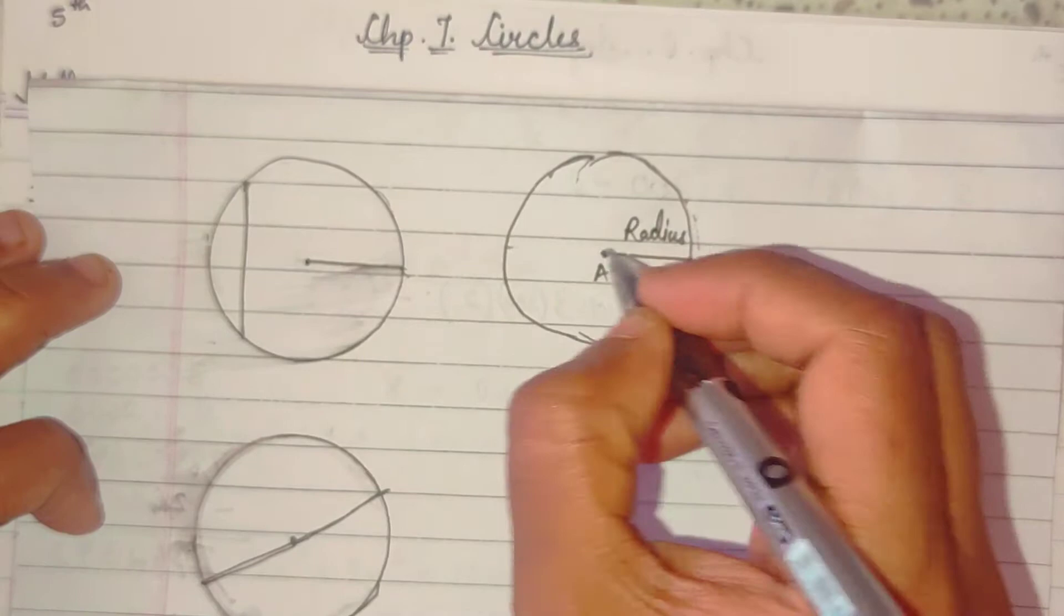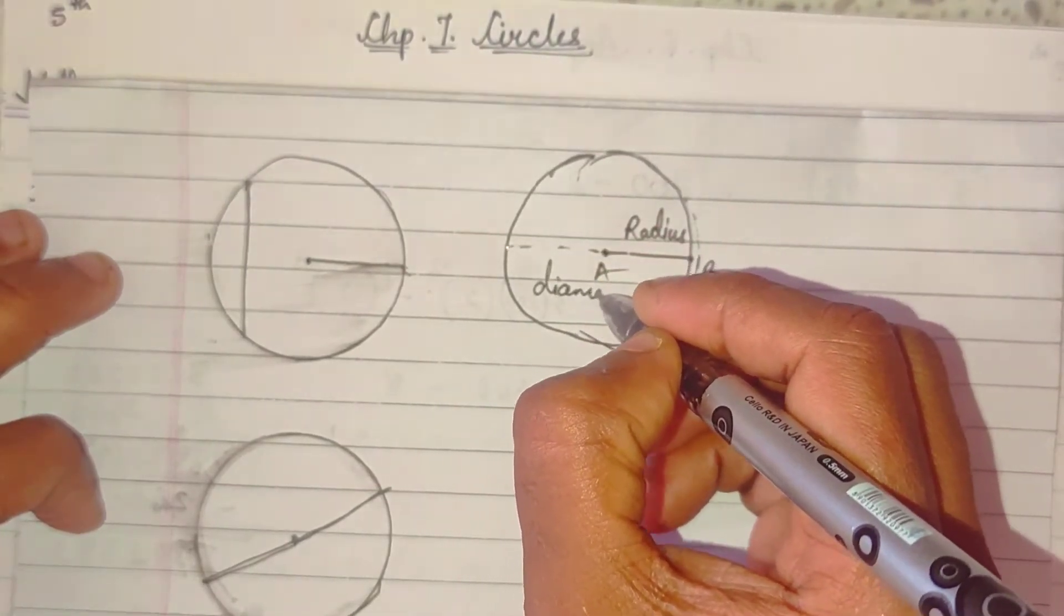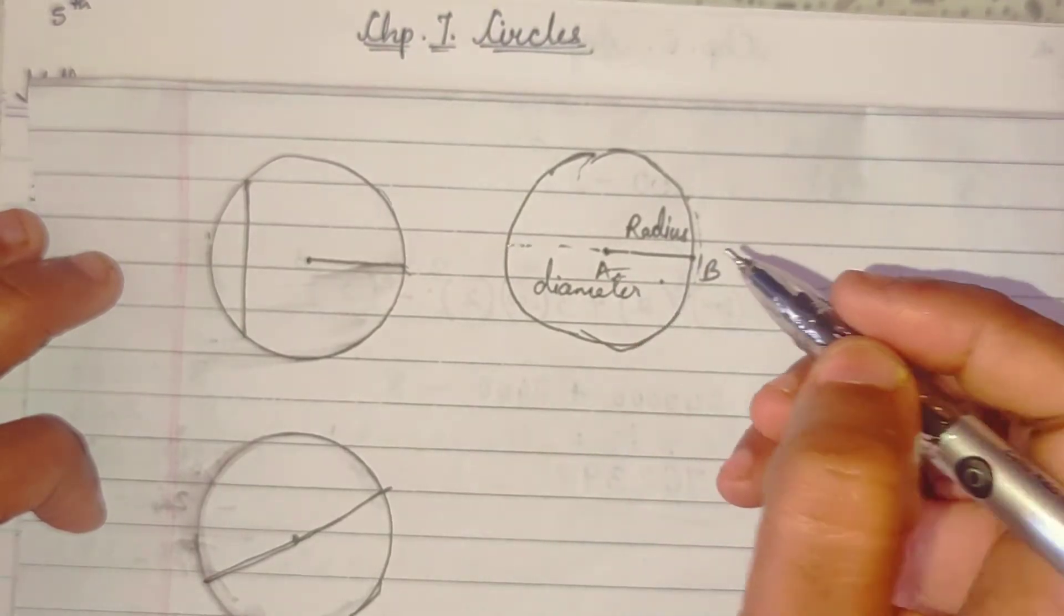Aur jab hum iska double karte hai, yahan tak line banate hai, that becomes diameter. It becomes diameter.